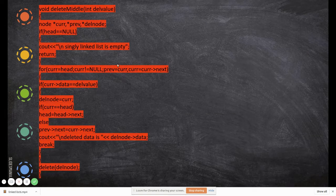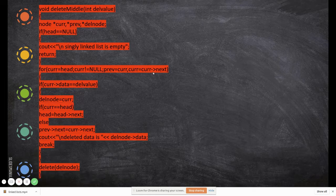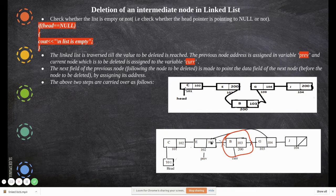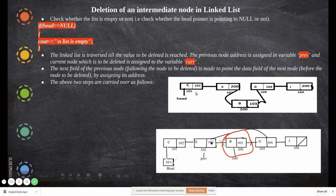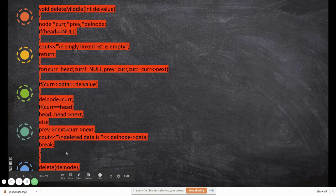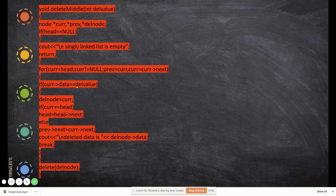Inside the loop, previous is assigned current, then current is moved to current->next. We check whether current node's data equals the delete value. If not, we keep moving: current advances to next and previous becomes the old current. This continues until the matching value is found or the list ends.